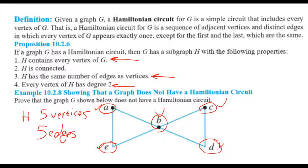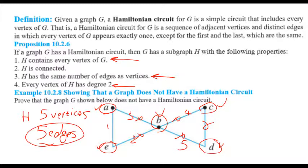If we remove two of the four edges incident on B, the total edge count drops. The original graph has six edges; removing two leaves only four edges. But condition three requires H to have five edges — a contradiction. We cannot have both four and five edges simultaneously. Therefore, by proof by contradiction, graph G does not have a Hamiltonian circuit.